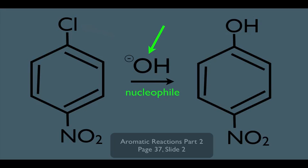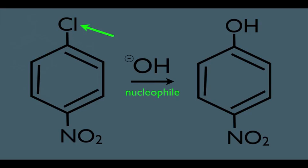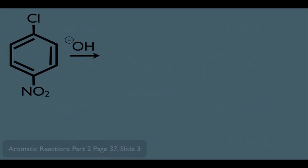Let's make an important observation here. All that's happening is we're replacing this Cl with the added nucleophile. Looking at the mechanism, the first step involves the nucleophile attacking the benzene ring at the carbon bearing the Cl. We've learned before that halogens act as pretty good leaving groups, and that's exactly the role Cl is going to play here.